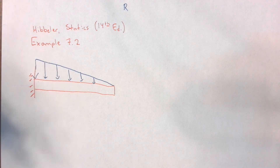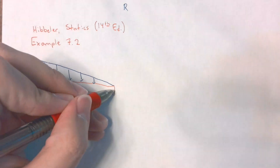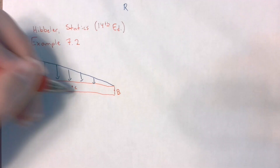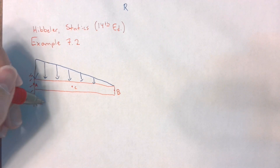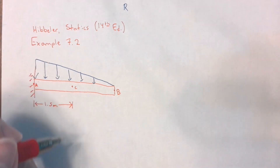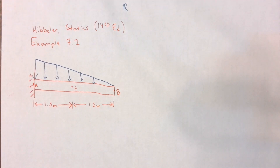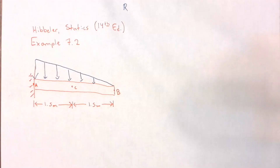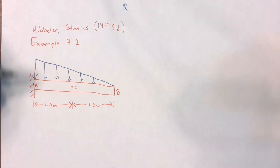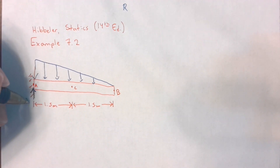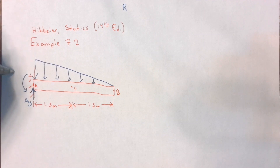They're giving us three points: A, which is at the support; B, which is at the end of the beam; and C, which is halfway through the beam. So we have one and a half meters from A to C, and another one and a half meters from C to B. This is a fixed support — can anyone tell me what reactions this support will exert on the beam? Normally a fixed support provides Y, X, and moment, but here there's no X direction force, so this support will only provide a Y reaction — I'll call it A_Y — and a reactive moment, M_A.